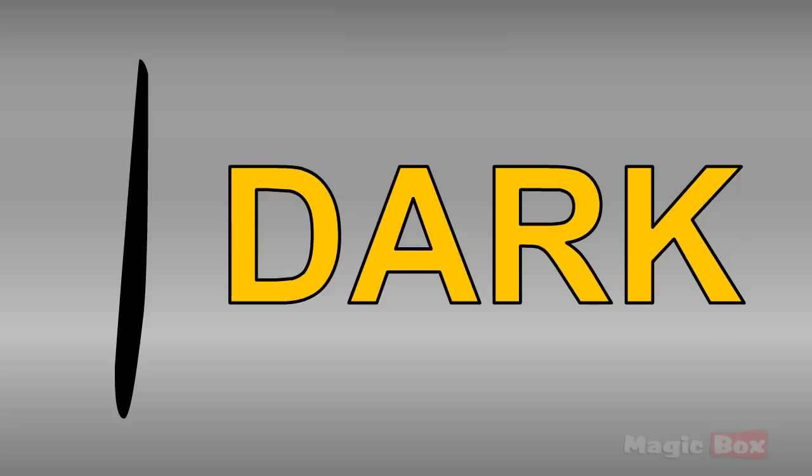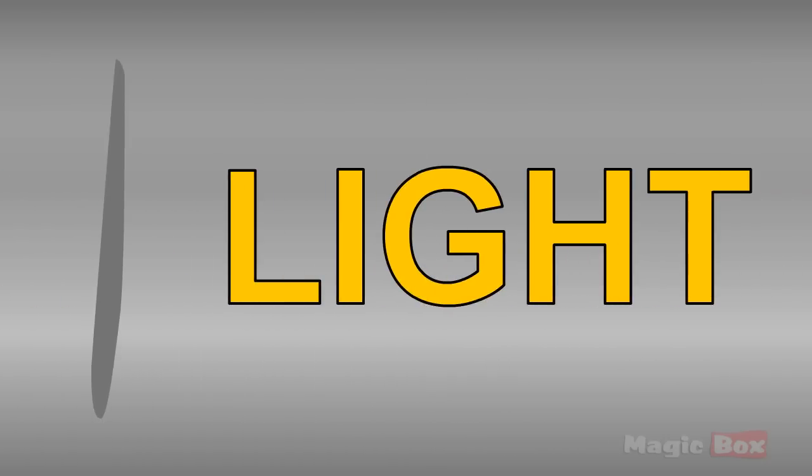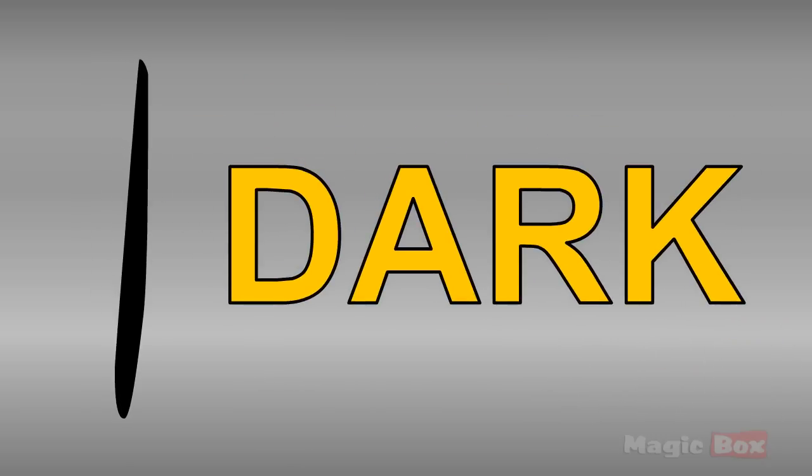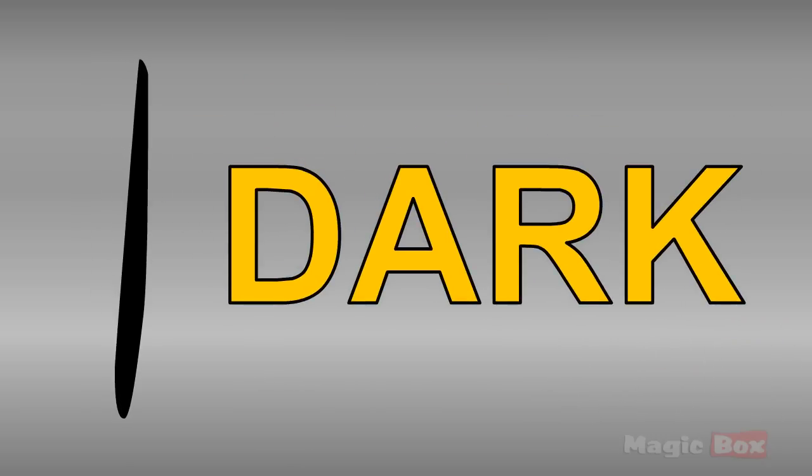Dark, and opposite of dark is light. Dark and light are opposite to each other. See children, this line looks so dark, so it is dark, and the other line is lighter.